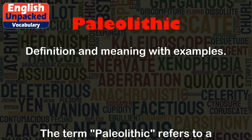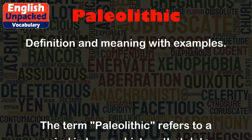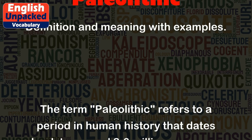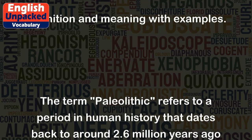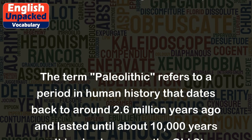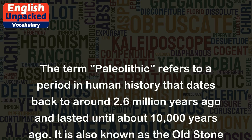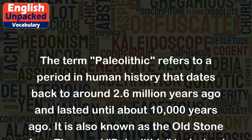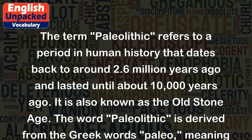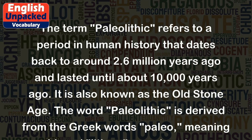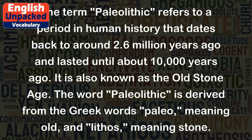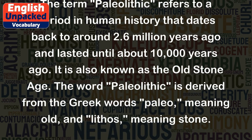Paleolithic. The term Paleolithic refers to a period in human history that dates back to around 2.6 million years ago and lasted until about 10,000 years ago. It is also known as the Old Stone Age.